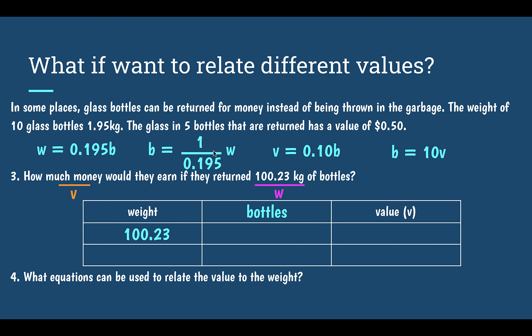I would use our second equation, multiplying that weight by 1 over 0.195. That gives me the number of bottles, which is 514.